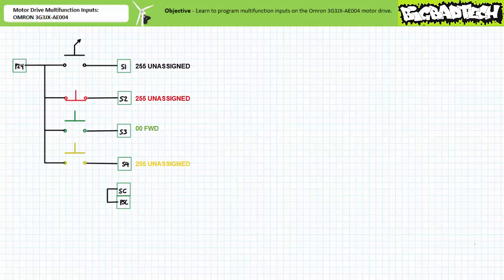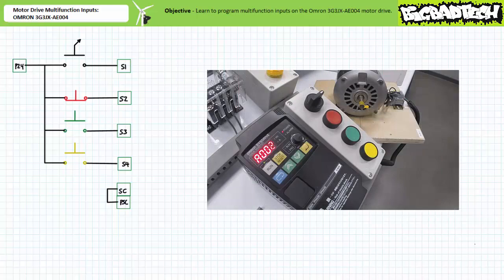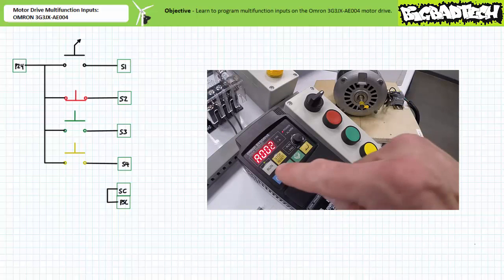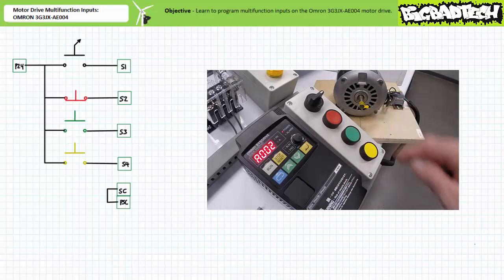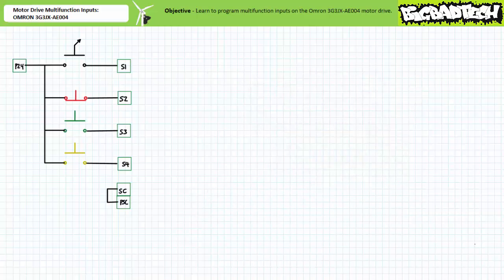This motor drive has now been programmed to recognize only input three as the initiation signal for forward operation. Now that the inputs have been properly assigned, we need to hand off control from the digital operator group to the multi-function input terminals. Navigate to extended function parameter A002, run command selection. Select mode. Decrement to 01, the multi-function input terminals, then select enter to save it. Nothing bad happens this time because the inputs have been properly assigned prior to handing off operation. This is the way to go.